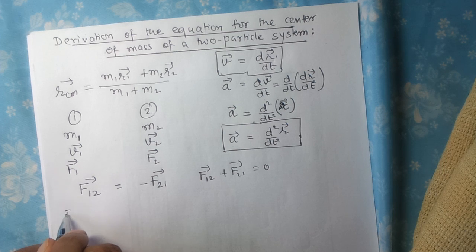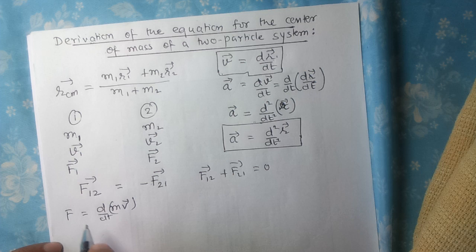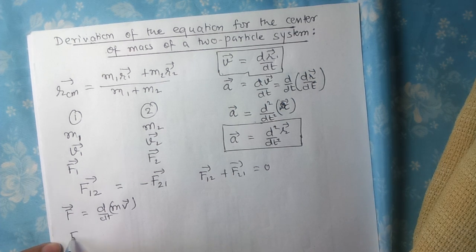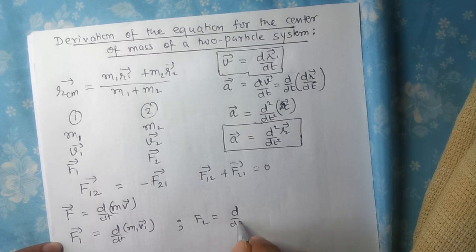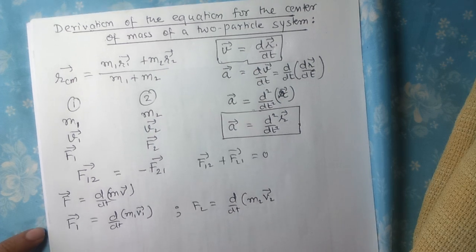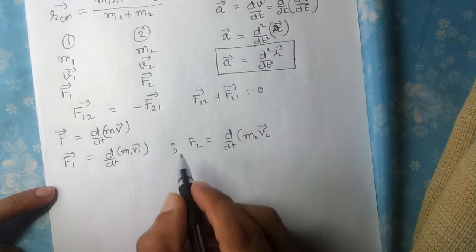Force is the rate of change of momentum, so force equals d(mv) by dt. Applying this equation to the two bodies, I will get F1 equals d by dt of M1V1, and F2 equals d by dt of M2V2. These are the two external forces.